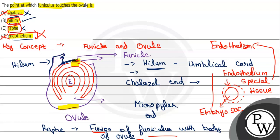Endothelium is a special tissue present around the embryo sac that provides nutrition. So option A is wrong, option C is wrong, option D is wrong. Option B, hilum, is the correct option. I hope you understood it well. Best of luck.